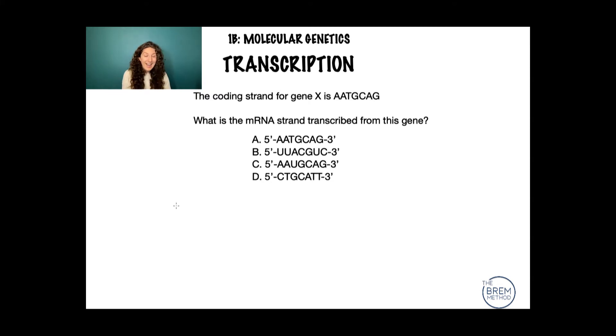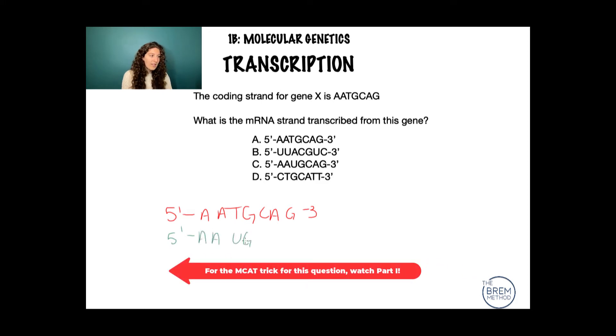Okay, so hopefully you used our hack that we talked about earlier, where if the coding strand is AATGCAG three prime, then our mRNA is going to be the exact same strand, just replacing the T's with U's. So it's going to look the exact same: AAUGCAG. It's literally the same strand, just replacing the T's with the U's. So that answer matches perfectly with C.